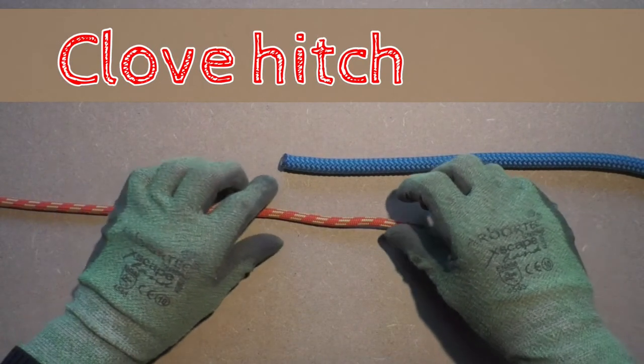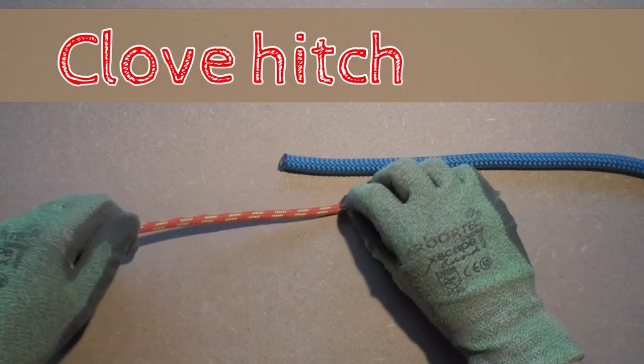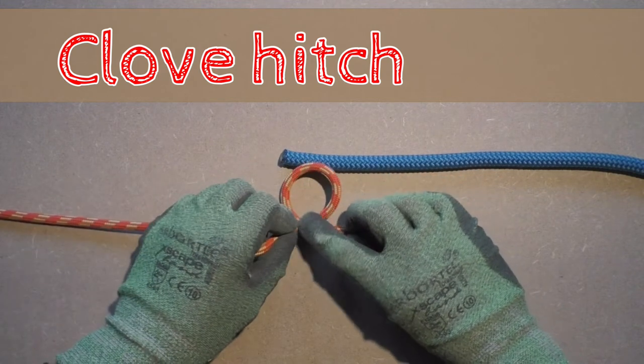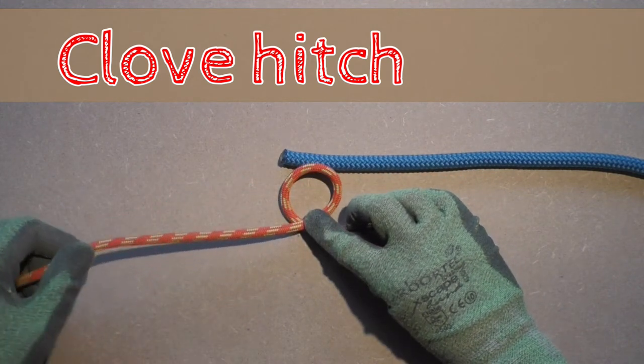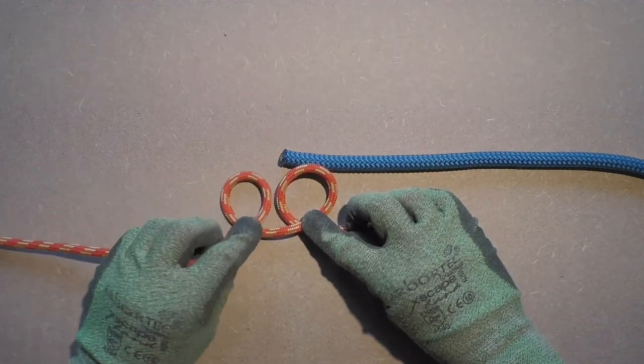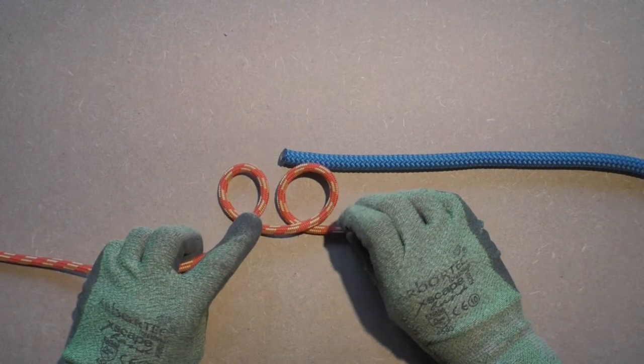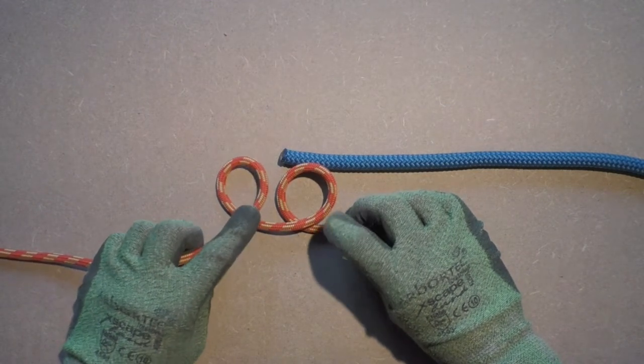The clove hitch is a simple but effective way to connect the climbing line to the throwline. In this video we are tying the clove hitch as a midline clove hitch which makes it easier to understand for most people and as a plus it's also quicker to tie.